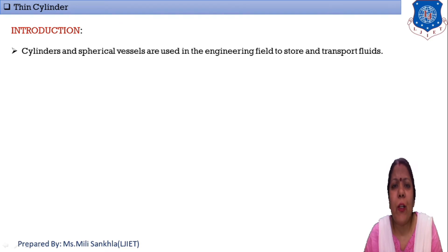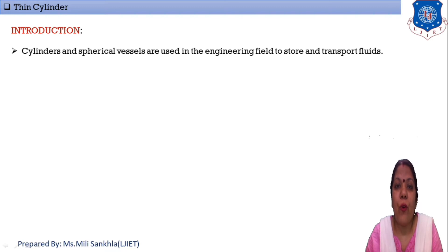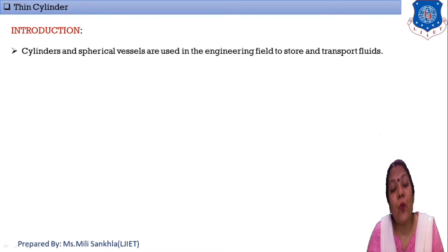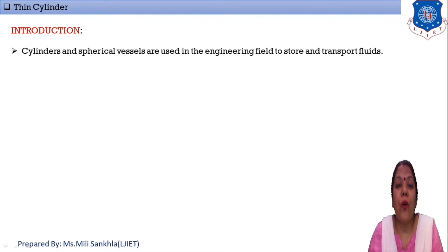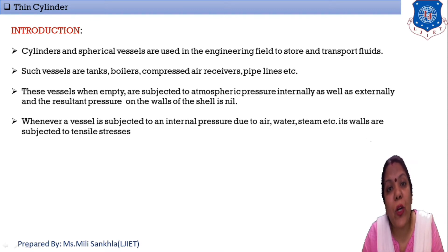Next, on introduction: why do we use thin cylinders and spherical vessels? The ultimate purpose of thin cylinders and spherical vessels is storage and transportation. For storage and transportation we use different types of vessels, just like tanks, boilers, and pipelines. Using these vessels we store and also transport fluid or any chemical from one place to another.